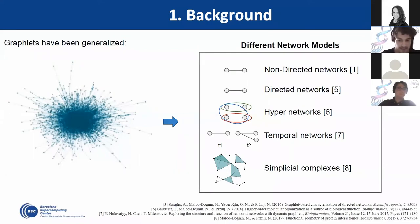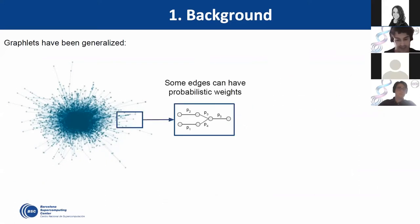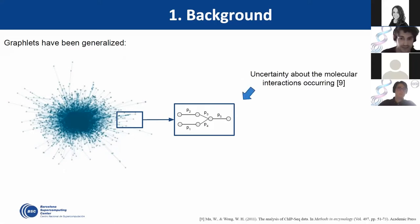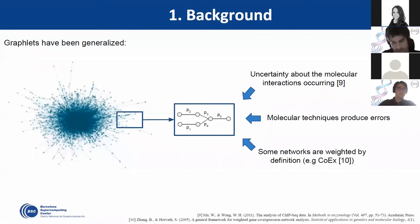At the beginning of this project, we were thinking about which kind of data is available in databases and how we can use it. If you go to a database, you'll probably realize that normally the interactions between proteins are linked with a concrete weight. This weight can represent many different things, including probabilities. These probabilities can represent the uncertainty about a molecular interaction occurring, errors from the techniques, or they can be an intrinsic part of the network's nature.